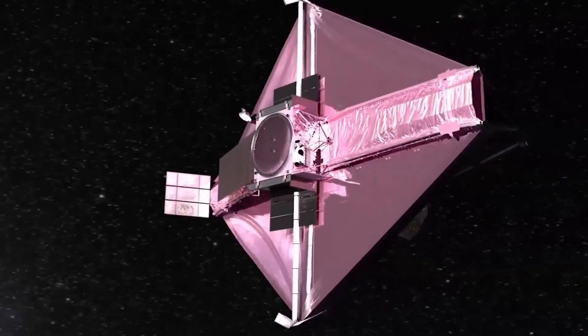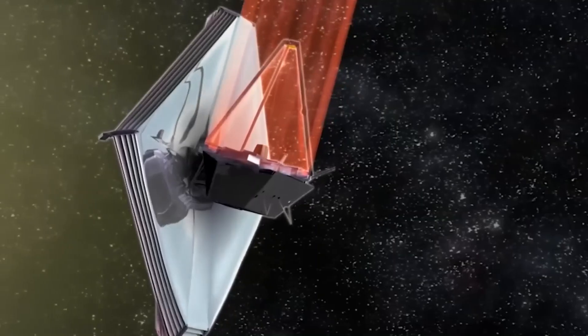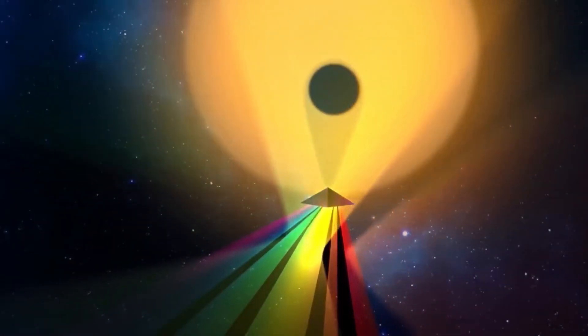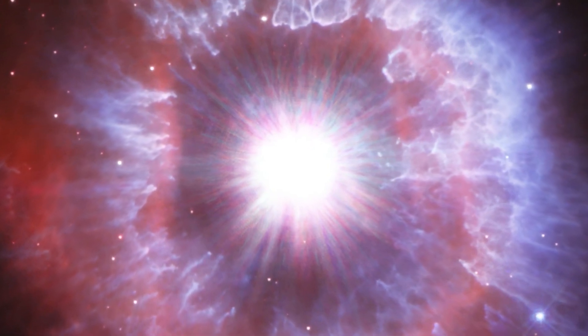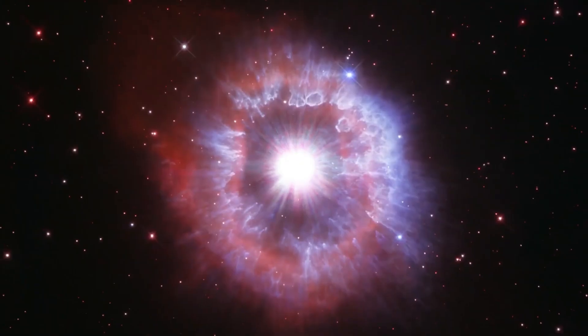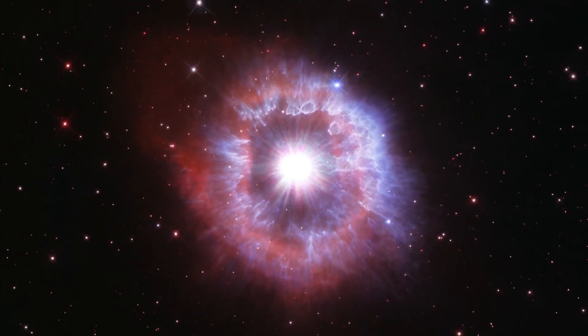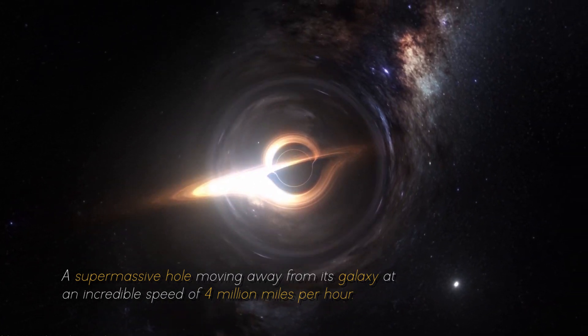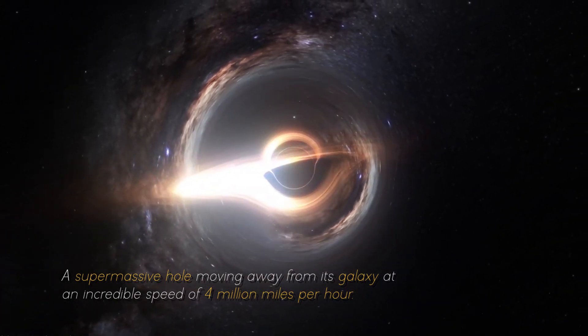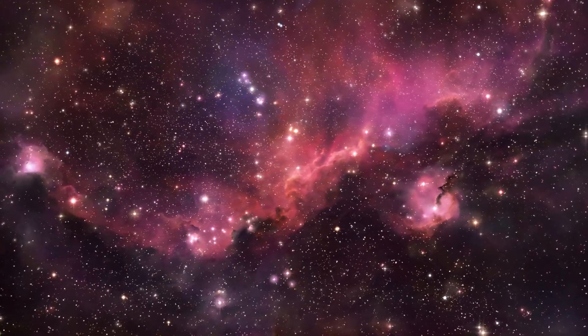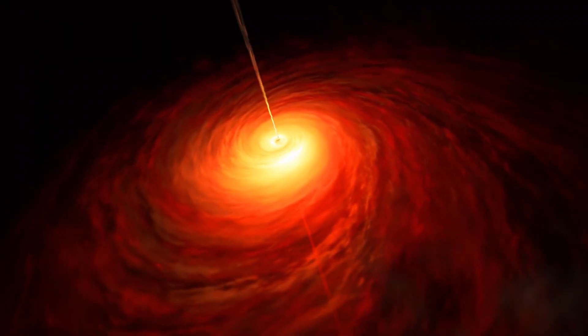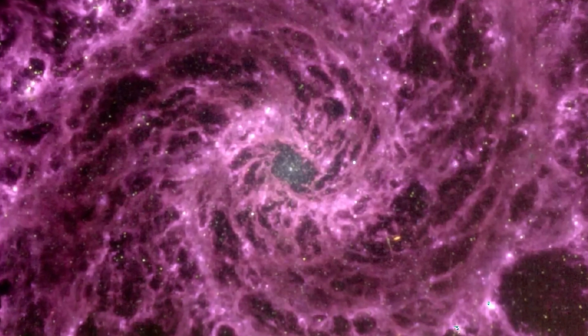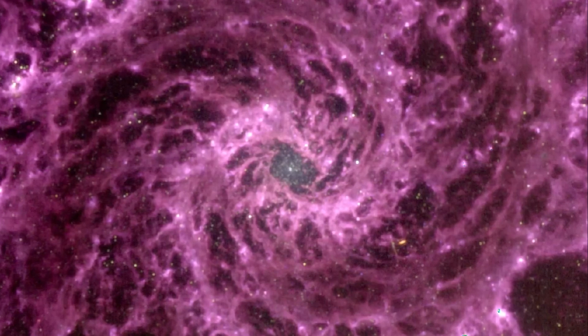In a surprising turn of events, NASA's James Webb Space Telescope has made a discovery that has astronomers around the world in awe. A few weeks ago, the telescope discovered the earliest known galaxy in the universe, but it now has detected something even more massive: a supermassive black hole moving away from its galaxy at an incredible speed of 4 million miles per hour. This latest discovery has very important implications and has generated much speculation among scientists and space enthusiasts about what it means for our understanding of the cosmos.